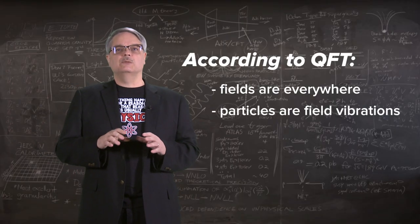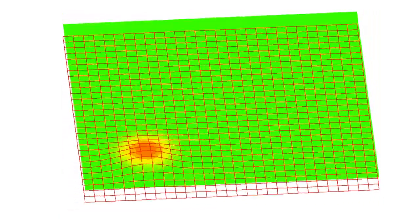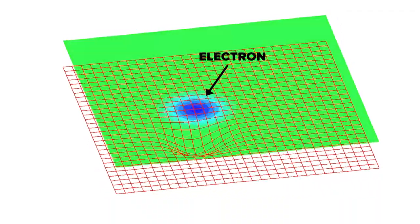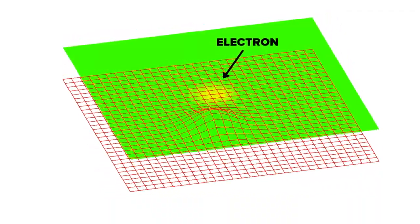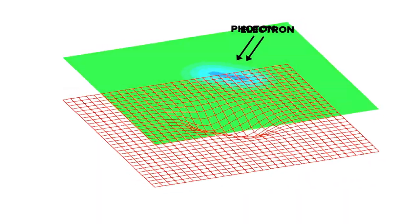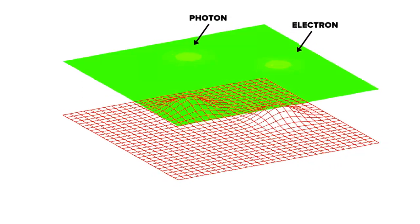The idea can also explain how particles interact. For example, suppose you have an electron moving along. The electron is a localized vibration of the electron field. If the electron emits a photon, then the quantum field theory way of looking at things says that some of the energy of the electron field sets up a localized vibration of a photon field, which then moves away.